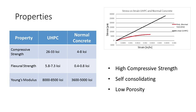Looking at the properties of normal concrete versus UHPC, you can see a significant improvement — going from about 26 to 33 KSI for ultra high performance concrete, compared to typical concrete at only 4 to 6 or 4 to 8 KSI for compressive strength. There are also significant increases in flexural strength and modulus. The stress-strain curve shown here illustrates the gap between how ultra high performance concrete compares to normal concrete.